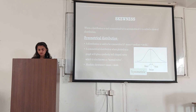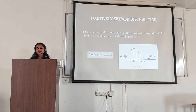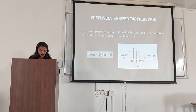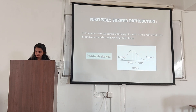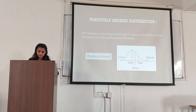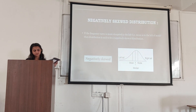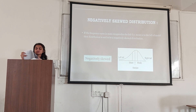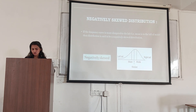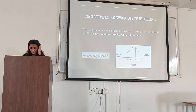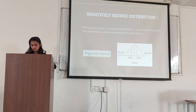Absolute skewness is equal to mean minus mode. If a frequency curve has a longer tail to the right, then the distribution is said to be a positive skew distribution. If the frequency curve is more elongated towards the left, the distribution is said to be a negative distribution.